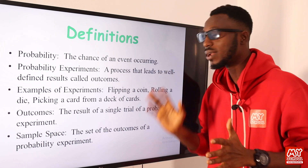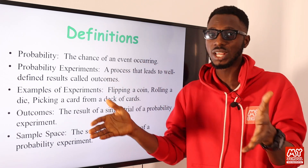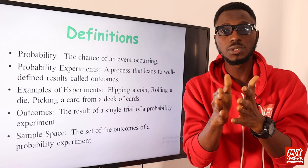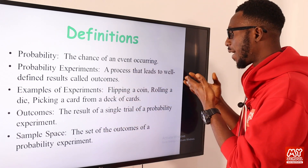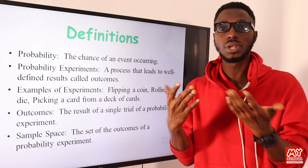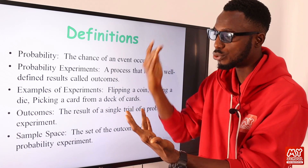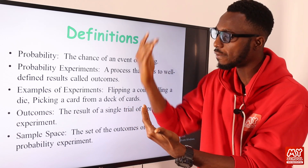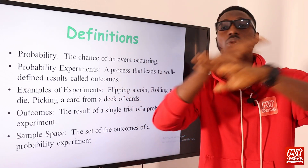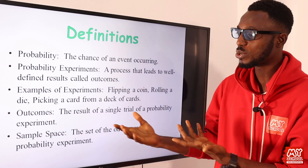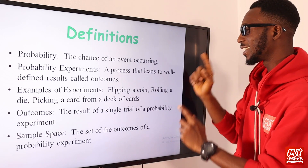If I flip a coin, my sample space will give me either a head or a tail — so my sample space will contain head and tail. If I roll a die, my sample space should contain either 1, 2, 3, 4, 5, or 6. That is my sample space. All of the possible results I can get is what we refer to as the sample space.